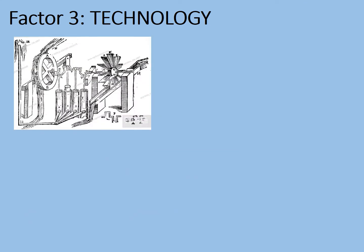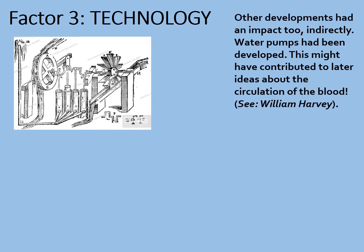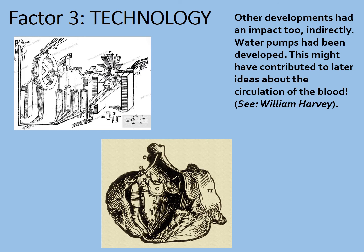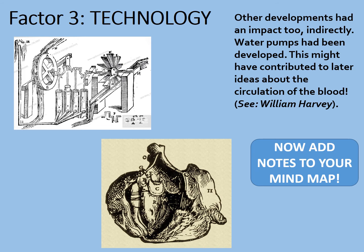That's not all on technology. This picture shows a pumping system that uses different pumps and chambers to circulate water around a wheel. Other developments had an indirect impact on medicine too. Water pumps like this were developed and may have contributed to later ideas about the circulation of the blood. In a future lesson, we'll look at William Harvey, who managed to demonstrate that blood circulates rather than being used up and created like a fuel. Here's a Renaissance diagram of the human heart — notice how they recognised that the heart also has chambers, a little like the pump. An improved use of accurate art and mechanical understanding could have an indirect impact on the understanding of the human body. Pause the video and add further notes to your technology section.